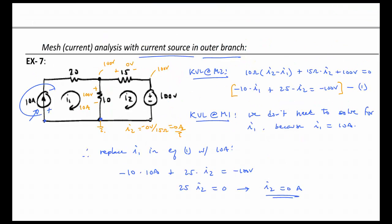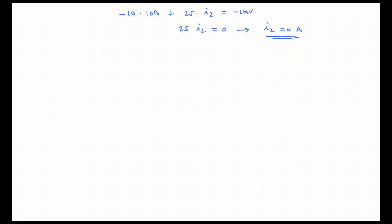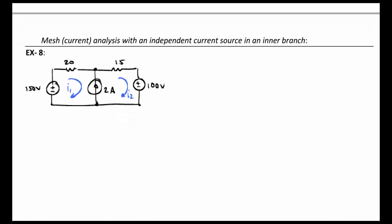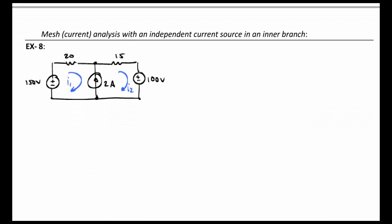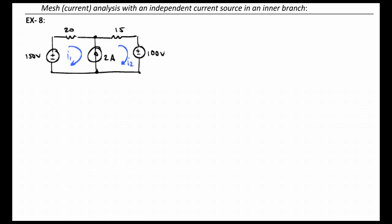What's different about this circuit is that whereas previously the 10 amp current source was in just mesh 1 and did not affect mesh 2, now we have this current that is basically involved both in mesh 1 and the mesh 2 current path. So how do we deal with that?